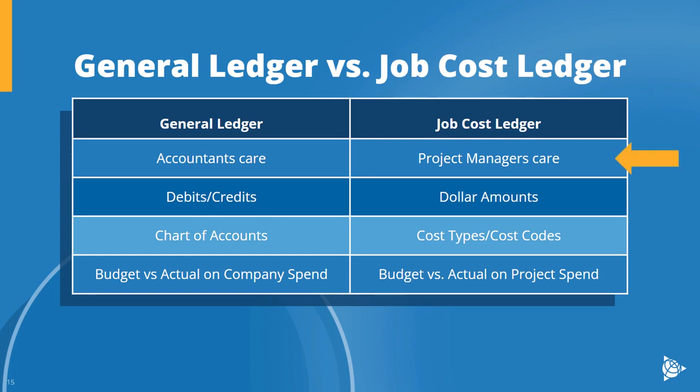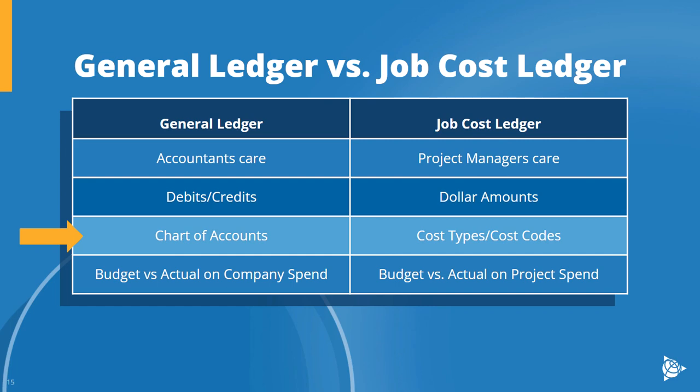A job cost ledger is used to track the costs associated with a specific project. These costs also hit the general ledger, but the job cost ledger is what project managers care about — they want to know details on what the project costs are. You'll never meet a project manager who asks for details on the general ledger. When accountants talk about the general ledger, they discuss debits and credits using language that can frustrate non-accounting people like project managers. Project managers don't care about debits and credits; they care about dollar amounts.